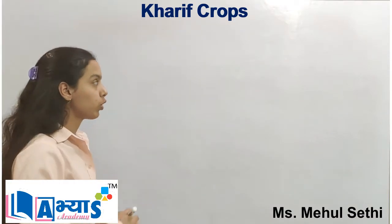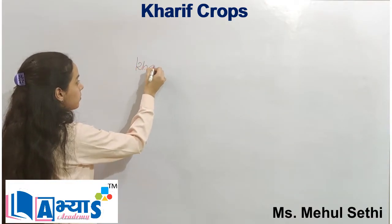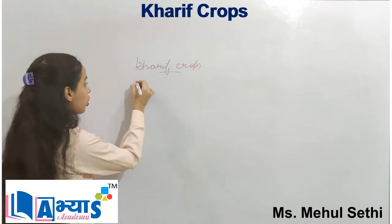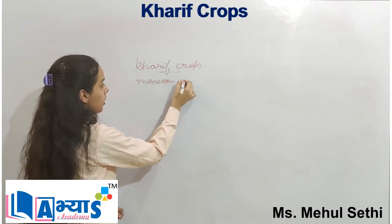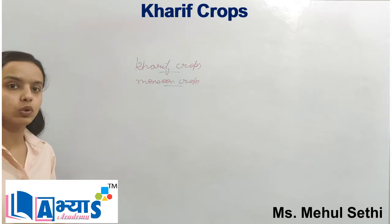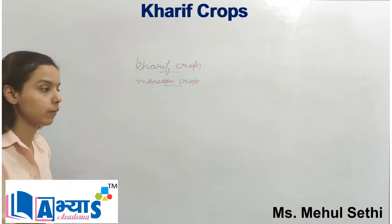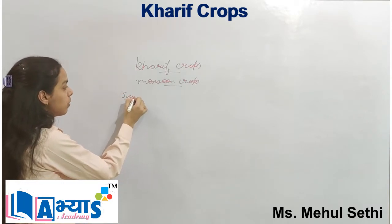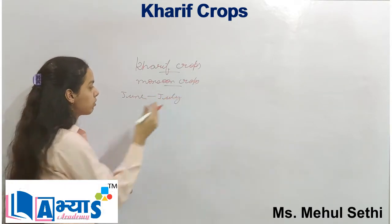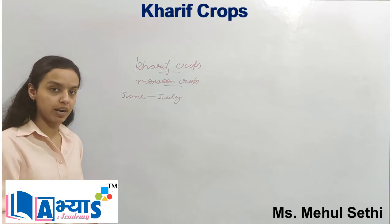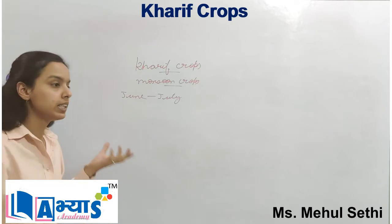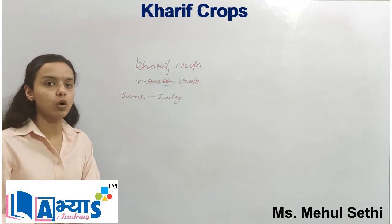Let us discuss the concept of kharif crops. Kharif crops are referred to as the monsoon crops because they are planted or sown during the onset of the monsoon, especially in India. In India, the monsoon starts during the month of June or the first week of June till July. The plantation period or the sowing period of kharif crops starts with the month of June and starts with the southwest monsoon.